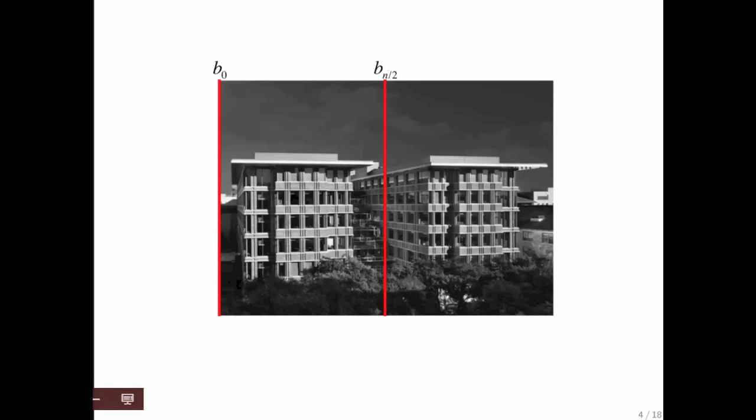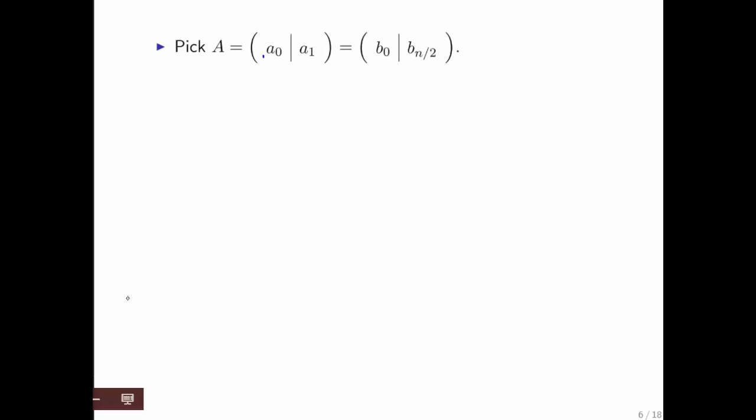What if we now take that matrix A to consist of two columns? And in this example, we're picking it to be the first column and a column in the middle. So then our matrix A has two columns, which we picked to be columns from our picture, namely the first column and a column in the middle.